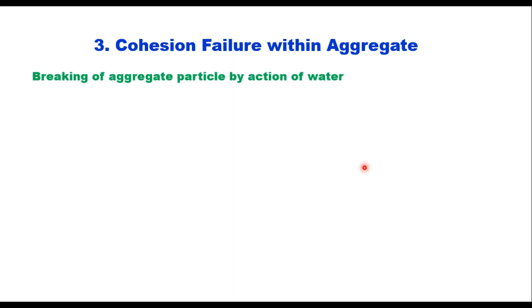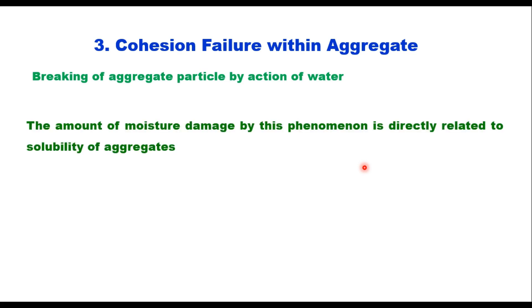The third mechanism is cohesion failure within aggregate. Some researchers propose that cohesive failure within the aggregate could cause moisture damage, and it is suggested that the amount of moisture damage by this phenomenon is directly related to the solubility of the aggregate.